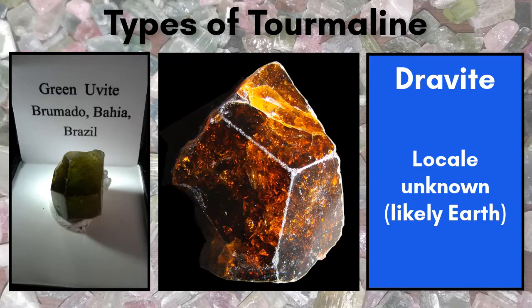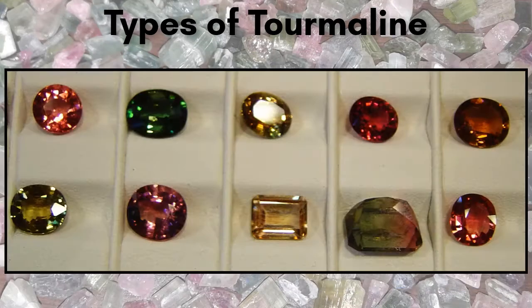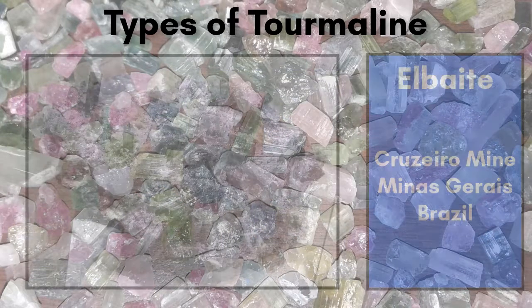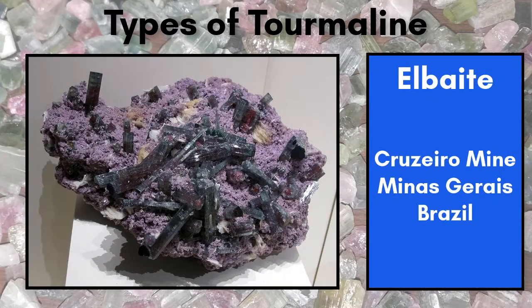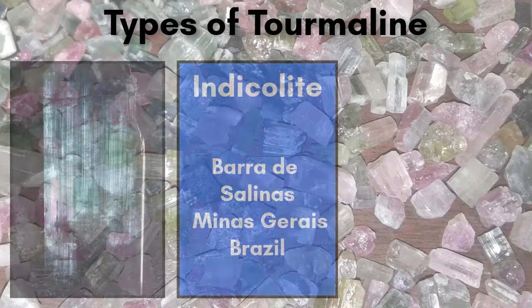But now we're going to classify by color anyway — because gemstones, that's why. Uvite accounts for the majority of tourmaline used in jewelry and makes for some pretty gnarly mineral specimens.